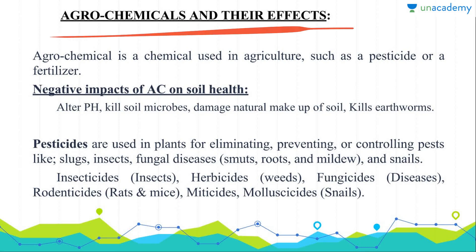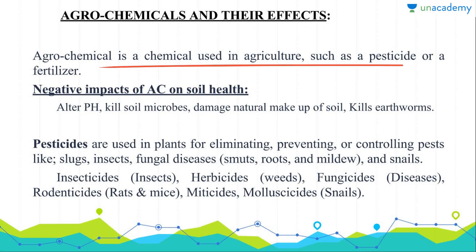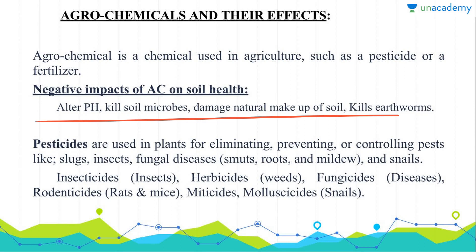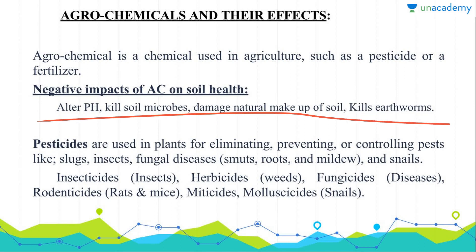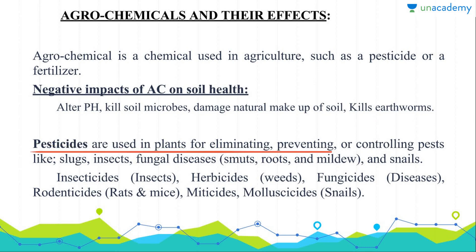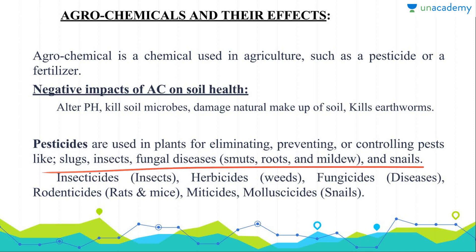Now we have agrochemicals and their effects. Agrochemicals are chemicals used in agriculture such as pesticides or fertilizers. The negative impacts of agrochemicals on soil health include altering the pH value of soil, killing soil microbes present in the soil, damaging the natural makeup of the soil, and killing earthworms. Pesticides are used on plants for eliminating, preventing or controlling pests like slugs, insects, fungal diseases, and snails.